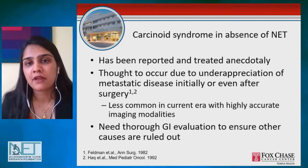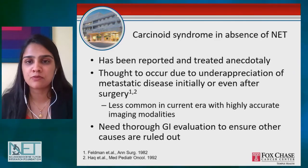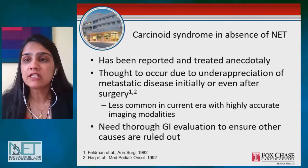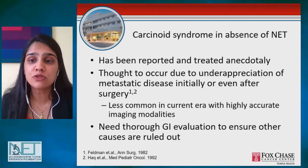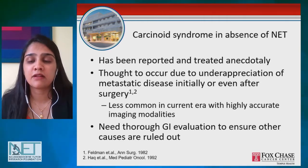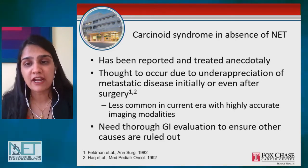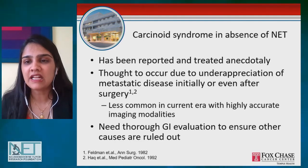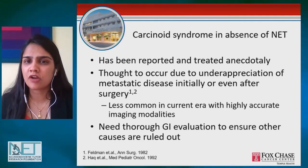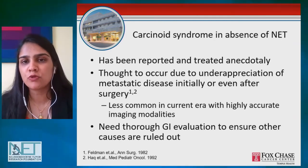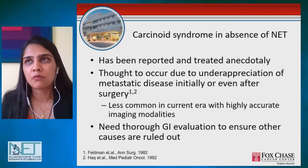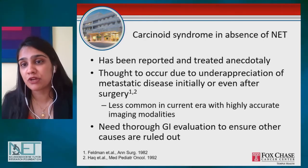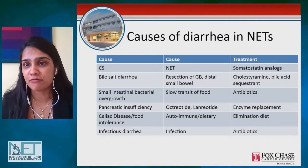There are some patients reported to have carcinoid syndrome with all the symptoms and even elevated hormone levels, but no tumor identified. This was treated anecdotally and was much more common in the past because we didn't have good tests. With gallium PET scans and current testing, we can diagnose patients very accurately. Having carcinoid syndrome without identifying a tumor is now extremely rare, and we have to look for other causes. This brings us to the question: what are the other causes of diarrhea in our patients?